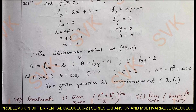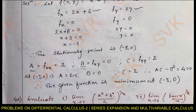Differentiating fx with respect to x gives fxx, denoted a = 2. The partial derivative of fx with respect to y gives fxy, denoted b = 0. Differentiating fy with respect to y gives fyy, denoted c = 2. At the stationary point, a = 2, b = 0, c = 2. The discriminant ac − b² = 4 − 0 = 4, which is positive, and a = 2 is also positive. Therefore, the function has a minimum at the stationary point (−3, 0).